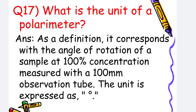What is the unit of a polarimeter? By definition, it corresponds to the angle of rotation of a sample at 100% concentration measured with a 100 mm observation tube. The unit is expressed as degrees.